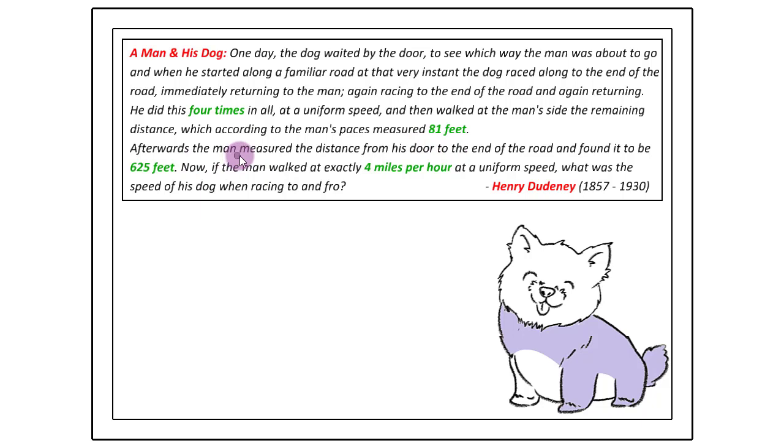Now afterwards the man measured the distance from his door to the end of the road and found it to be 625 feet. Now if the man walked at exactly 4 miles per hour at a uniform speed, what was the speed of his dog when racing to and fro?